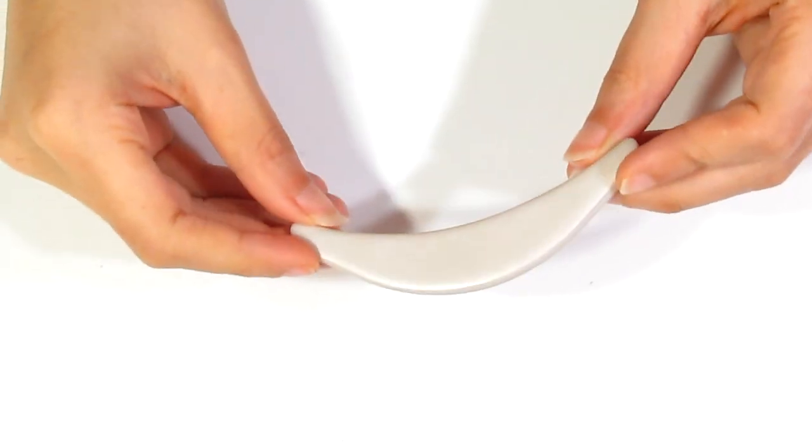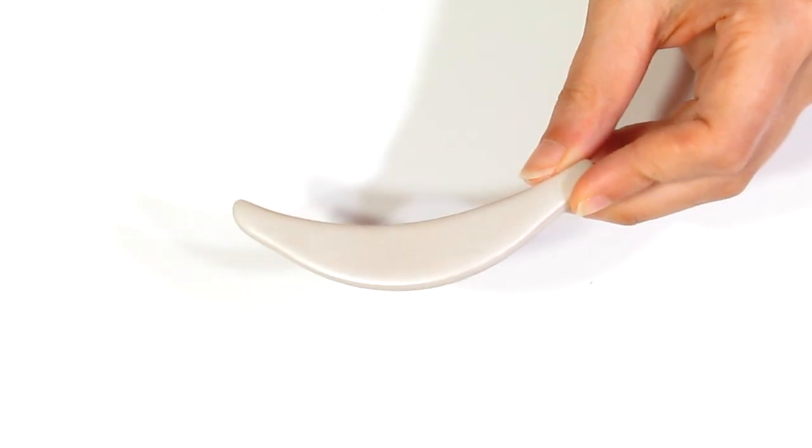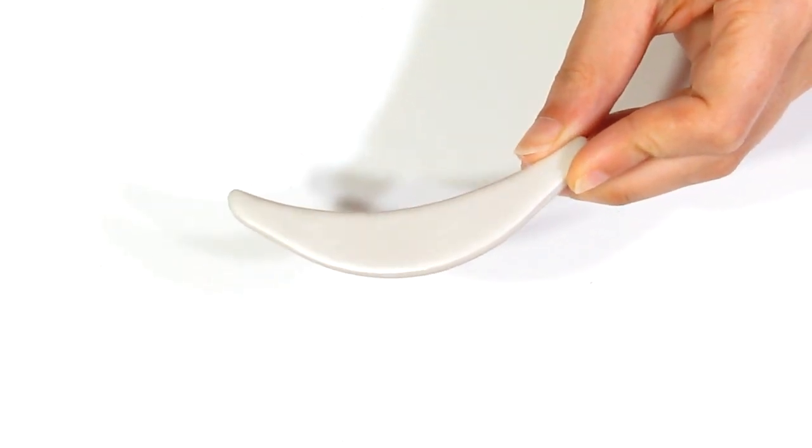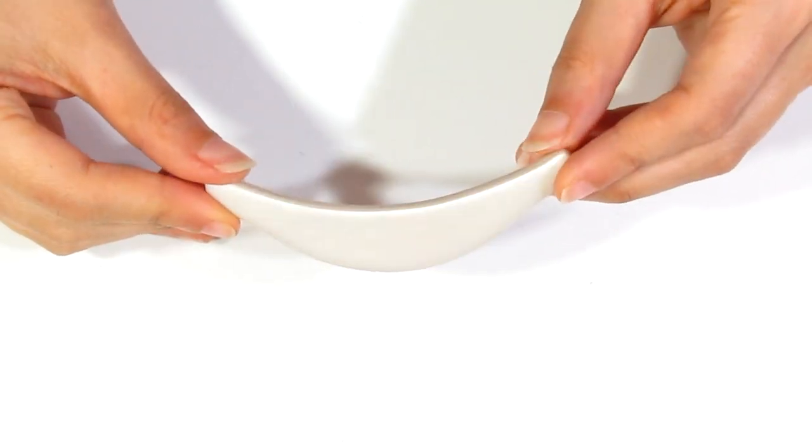When it's done it should look like this. You can see it's nice and firm. If you need to give it a sand, then give it a quick sand with 400 grit sandpaper. But this one's perfectly fine.